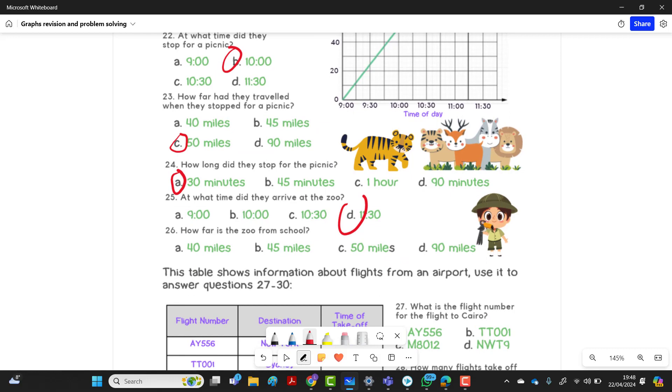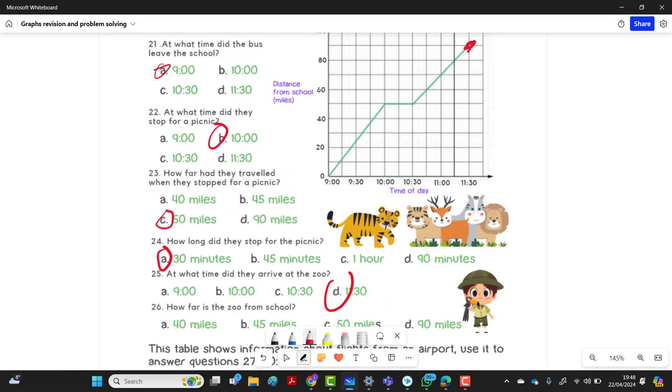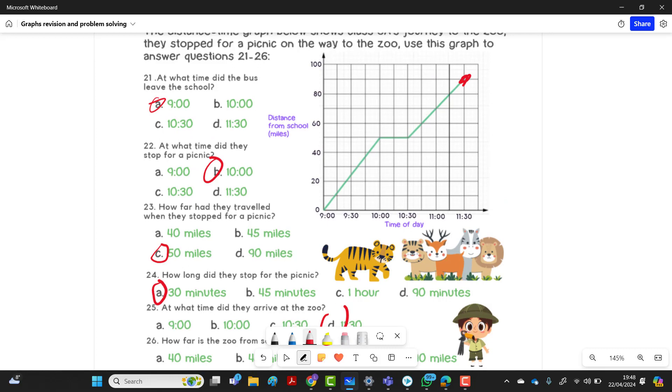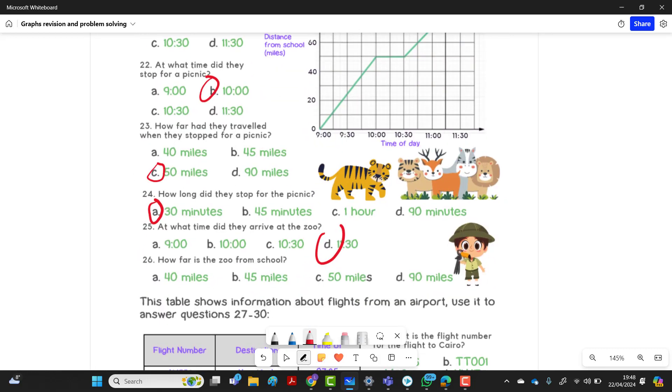Okay, how far is the zoo from the school? That'd be 90 kilometers. 26 is D. Okay, so let's rub these out.